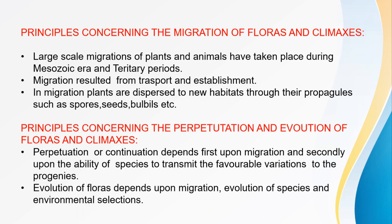Plants disperse to new habitats through their propagules such as spores, seeds, and bulbs. Some propagules migrate through animals and some spores migrate through air.